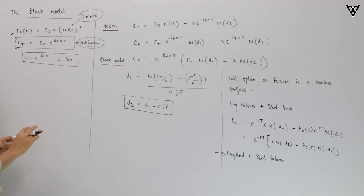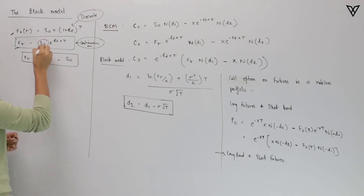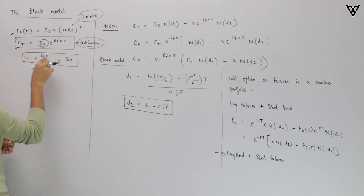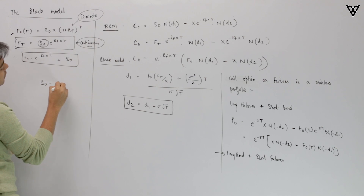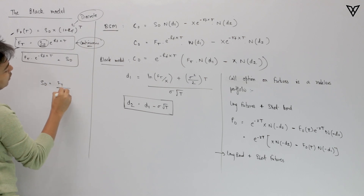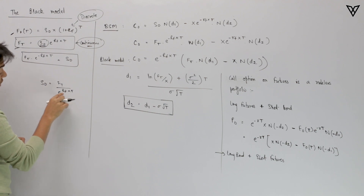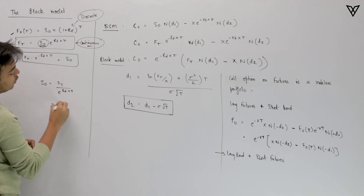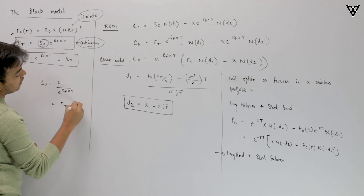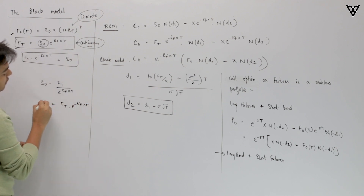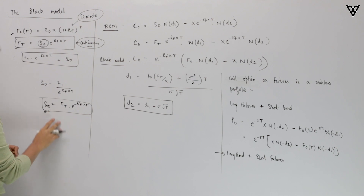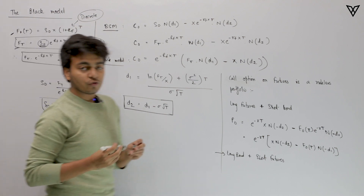So if we want to figure out the value of S0, we rearrange to get S0 = F(t) / e^(rf × t), which equals F(t) × e^(-rf × t). We will keep this equation in mind because we are going to use it to prove the Black model.